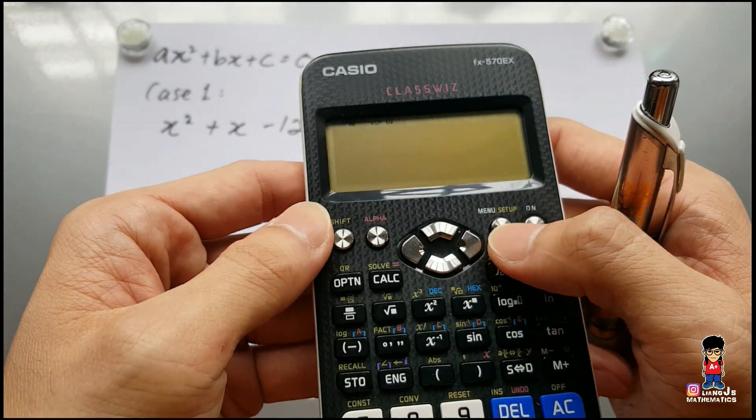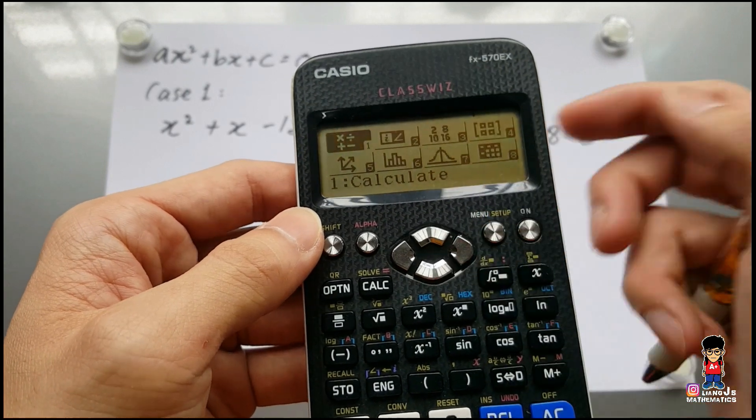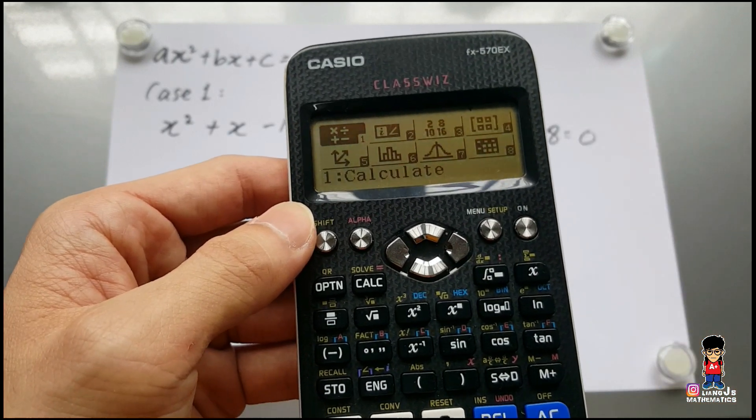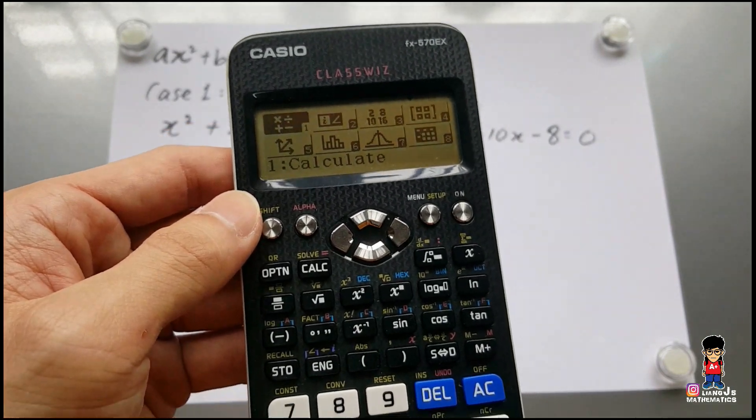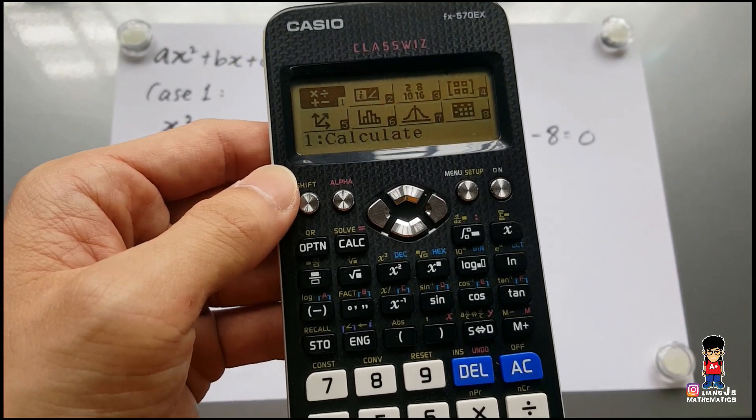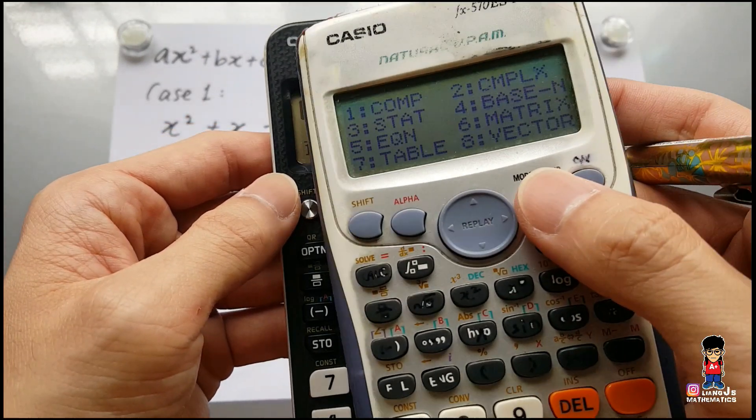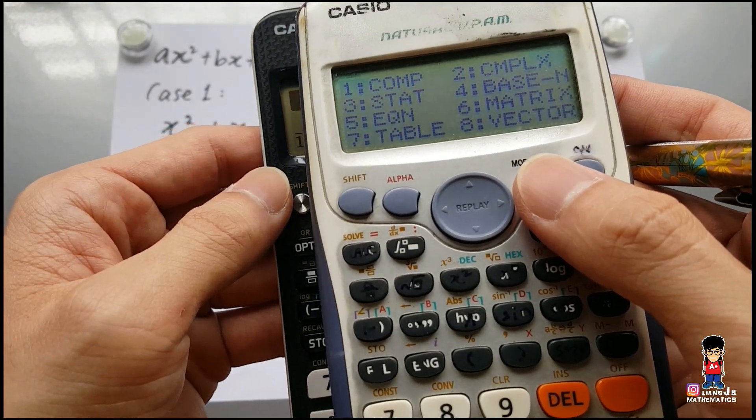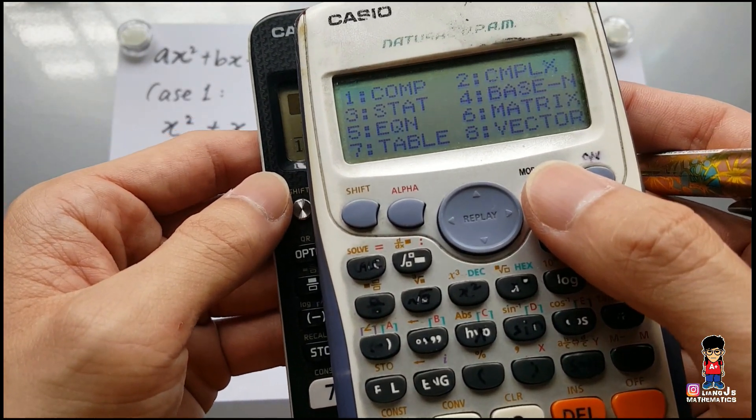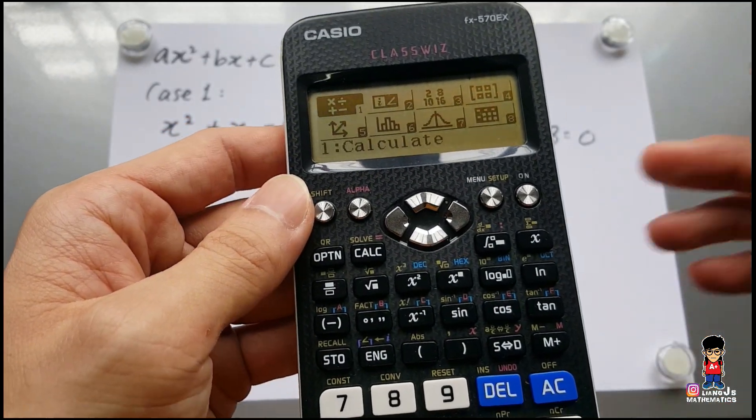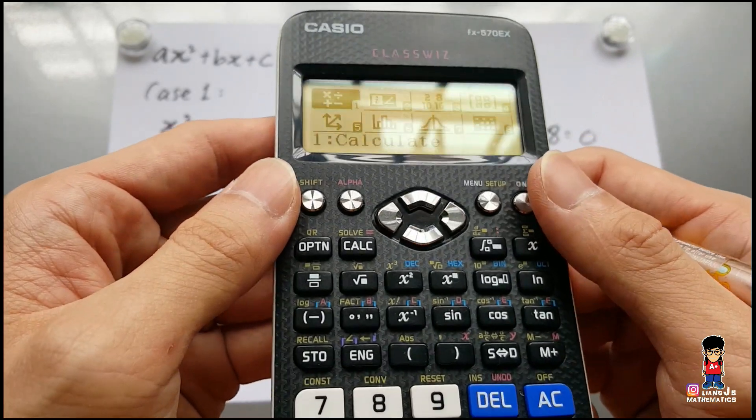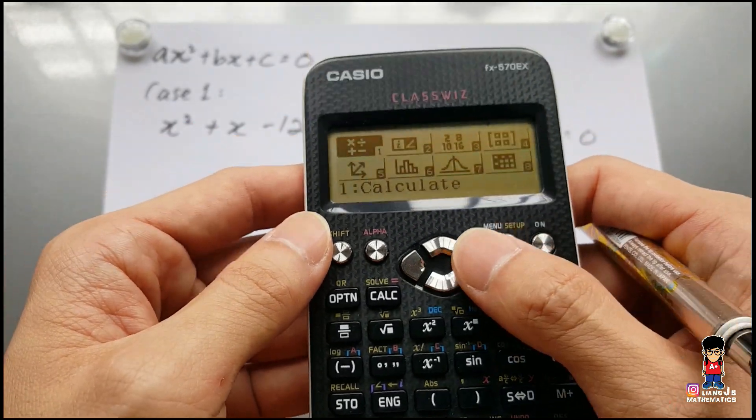So when you press on, you press menu. So instead of having those words like EQN, you have your lot. So let's see, you talk about this design. When you press mode, you see like EQN, STAT, COMP, all these complex matrix, vector, lot of things. So we come to this thing, instead of words, it's in graphics, it's in pictures.